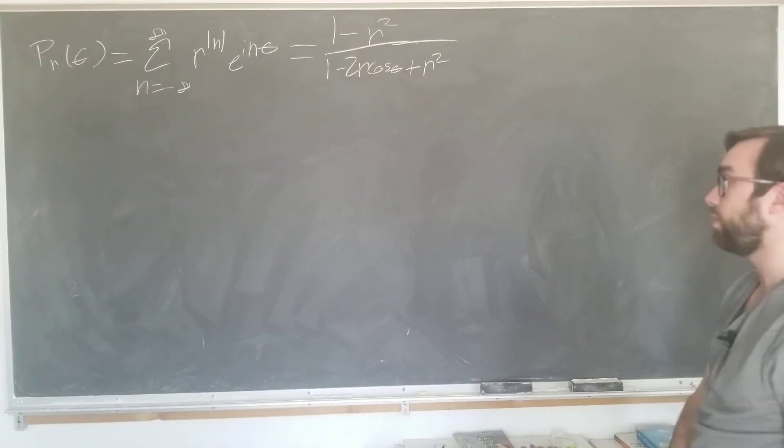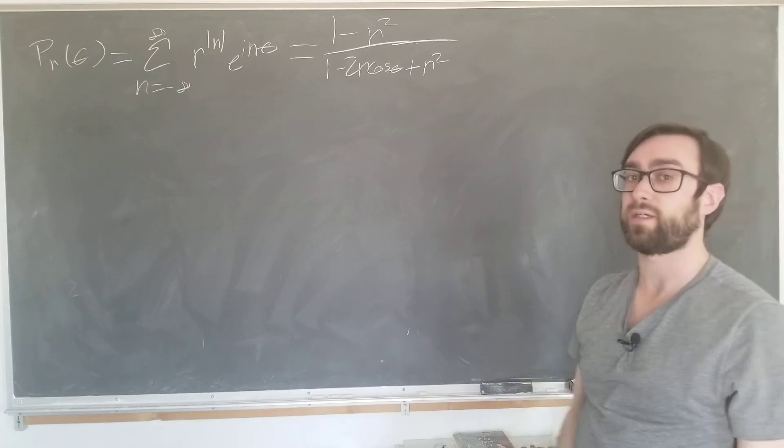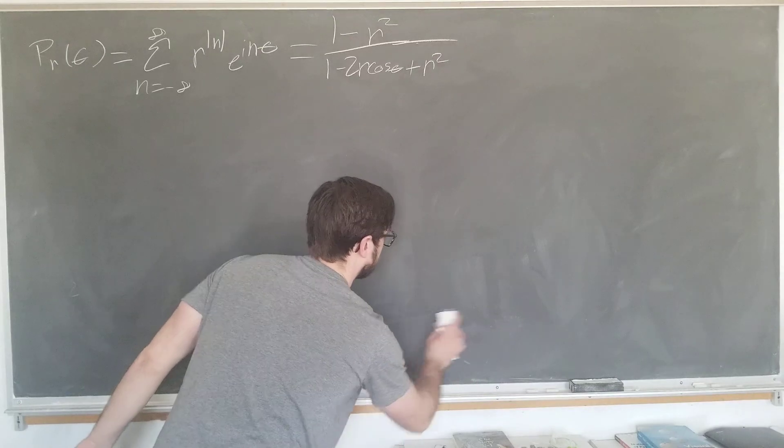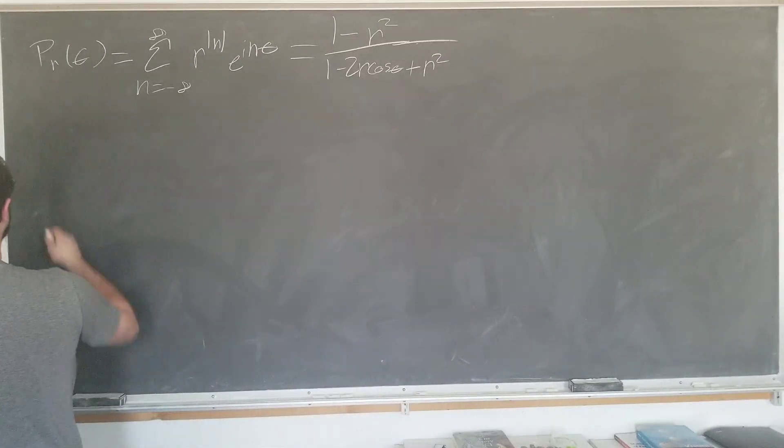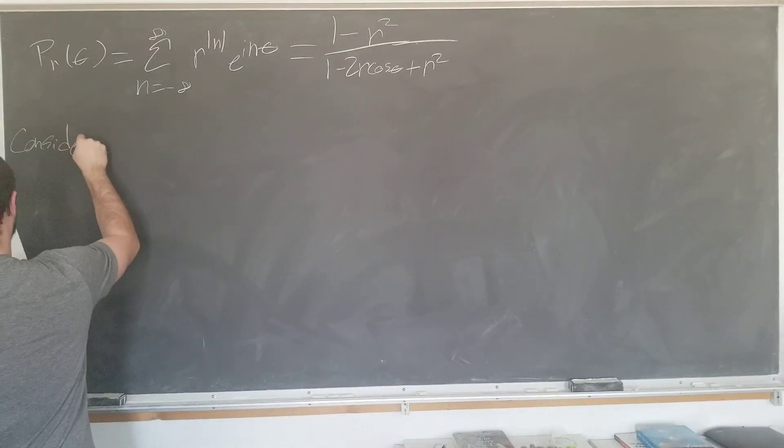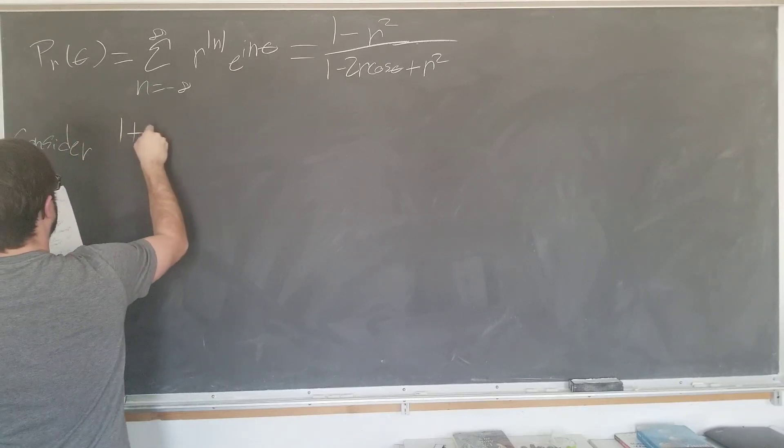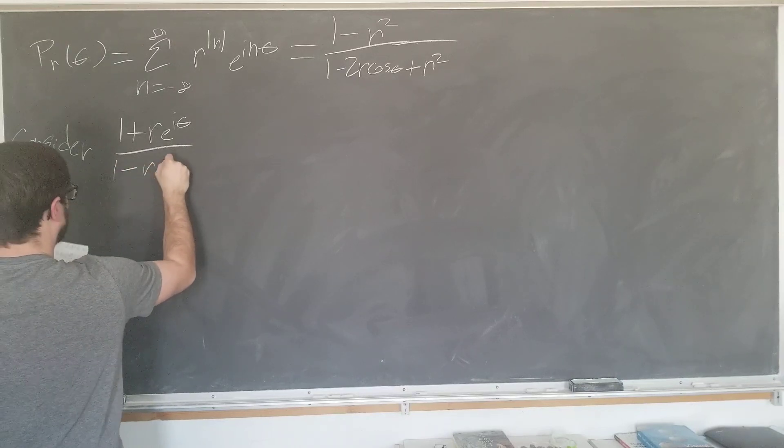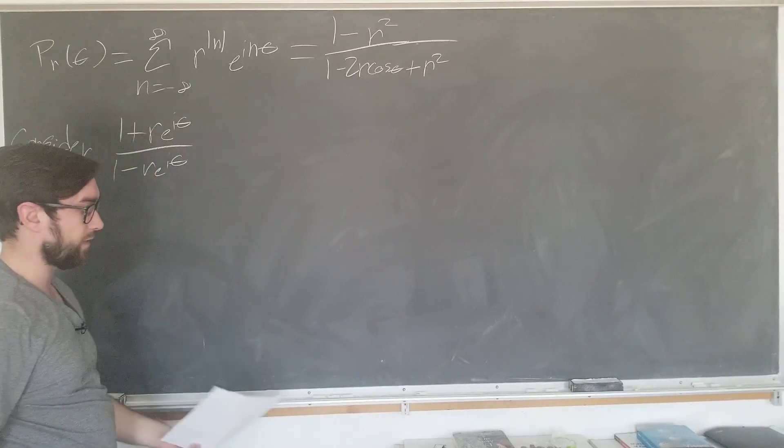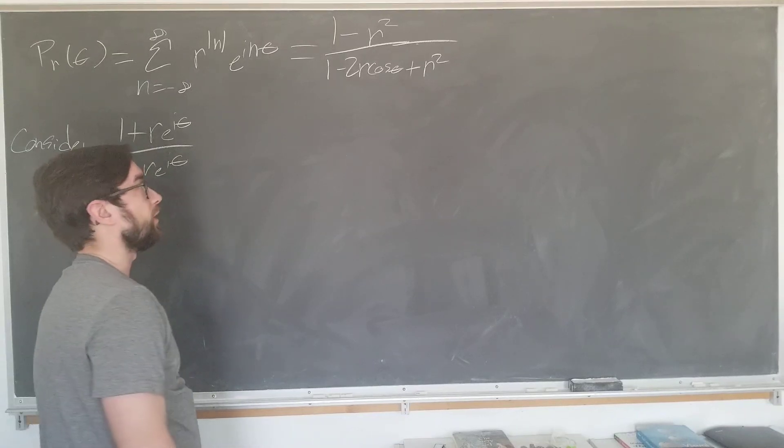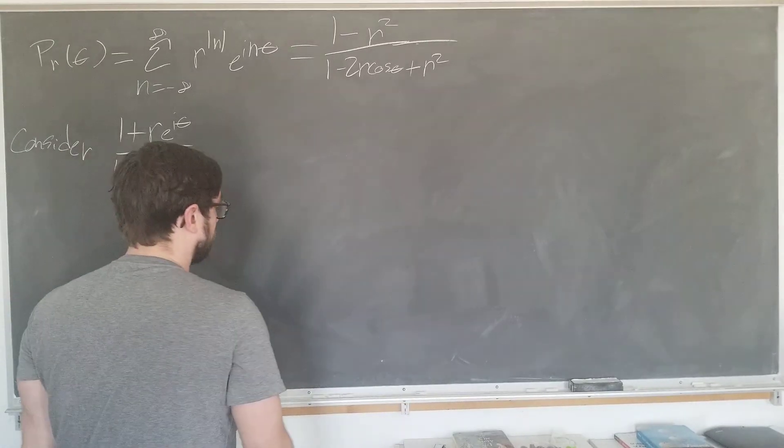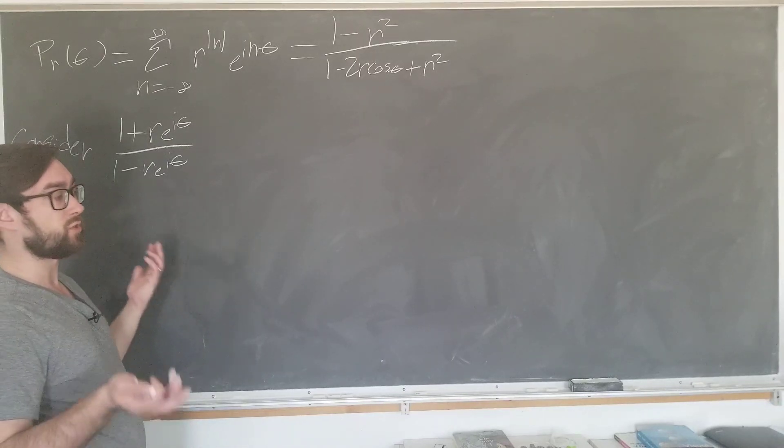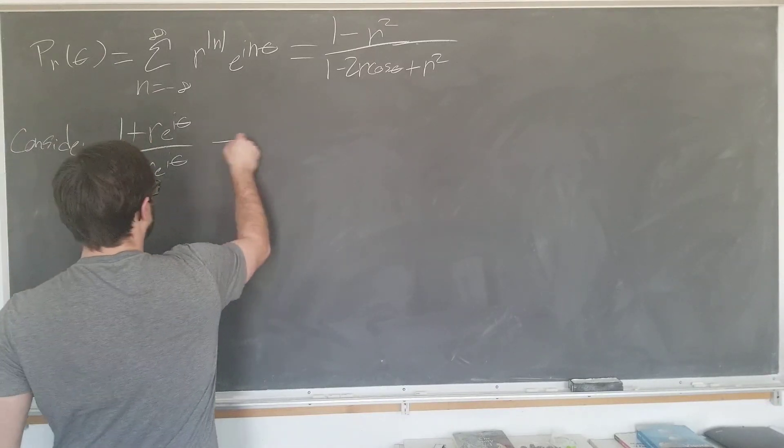The easiest way to see this equivalence is to just start with the complex function in question. So we're going to consider the following function, 1 plus r e to the i theta over 1 minus r e to the i theta. Just one minus sign of difference, but we'll see that this is related to the kernel that we just derived and is related to its complex form. Let's just start by rationalizing now. See what we get.